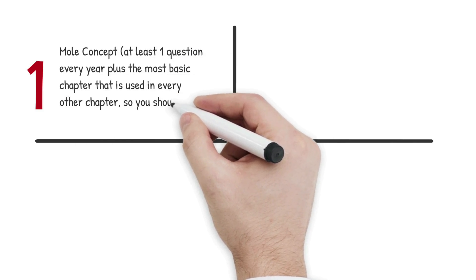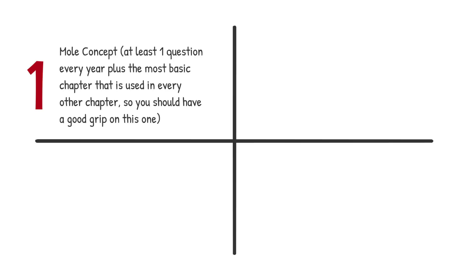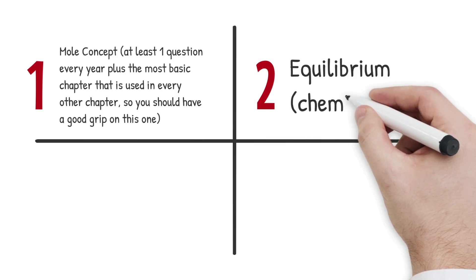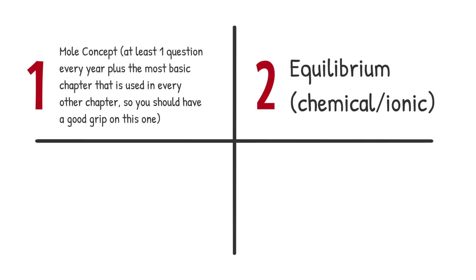First is mole concept. At least one question every year plus the most basic chapter that is used in every other chapter. So you should have a good grip on this one. Mole concept is included with electrochemistry as well. You can see it in chemical kinetics as well, in solutions as well. So mole concept is the base. Coming to equilibrium. Either chemical or ionic. You can expect one question from this chapter as well.